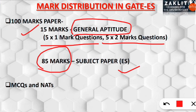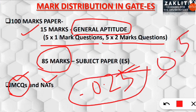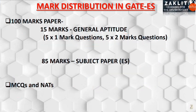Questions are of two kinds: MCQs and Numerical Answer Types (NAT). For MCQs there is negative marking — minus 0.25 for a one-mark question and minus 0.5 for a two-mark question. However, for Numerical Answer Type questions there is no negative marking, so you can attempt every NAT question directly.